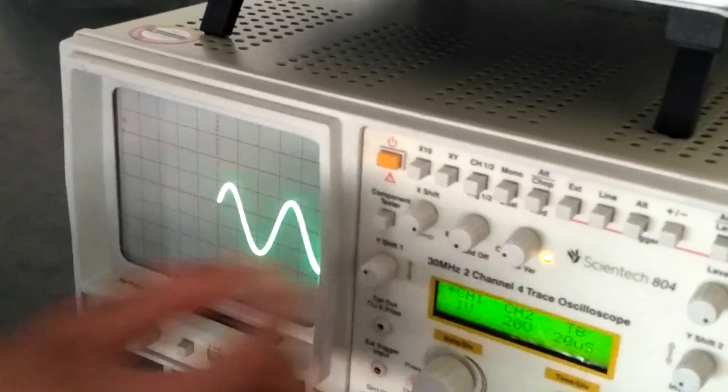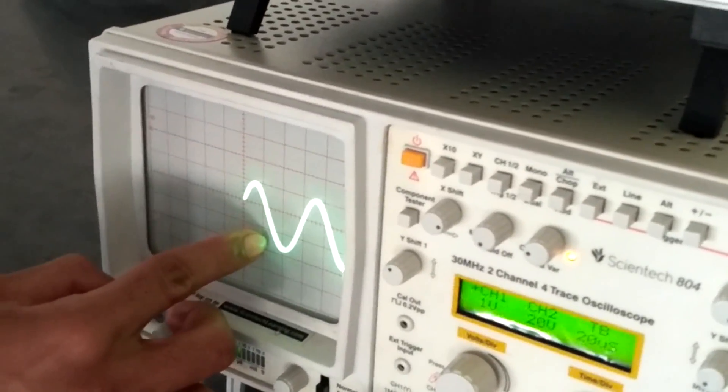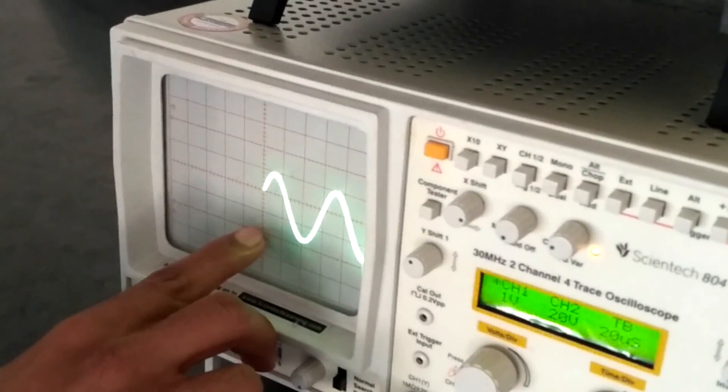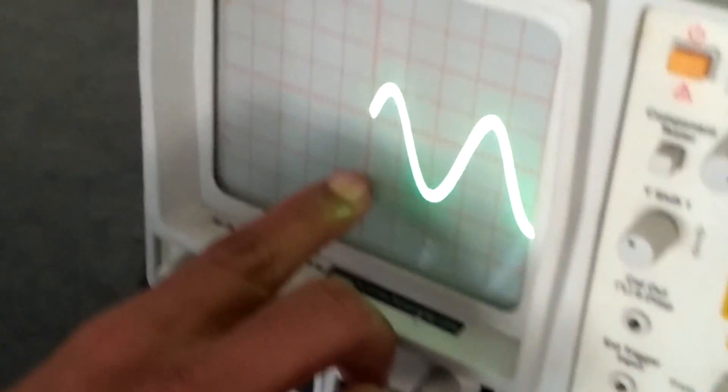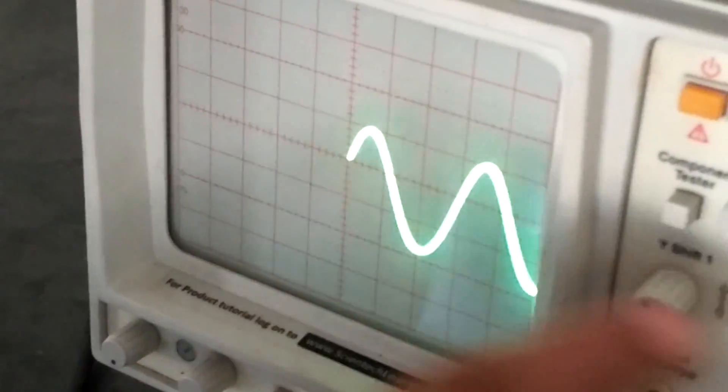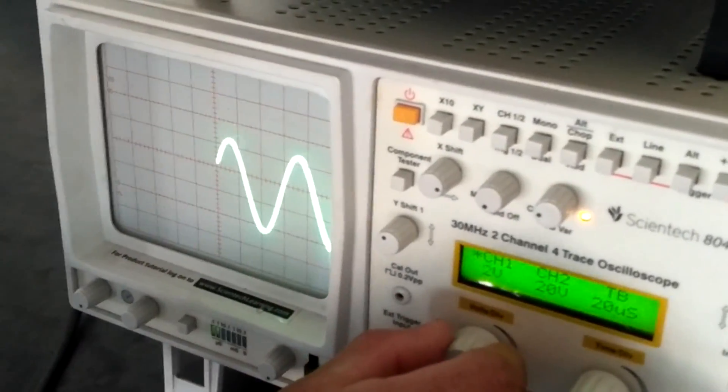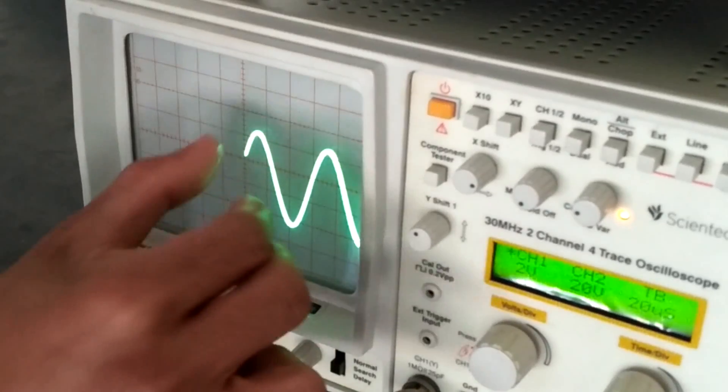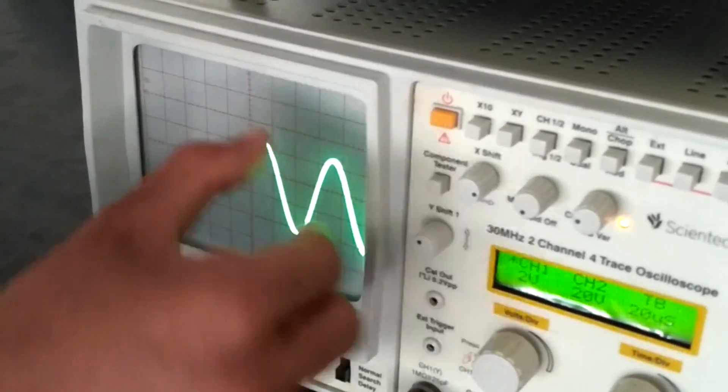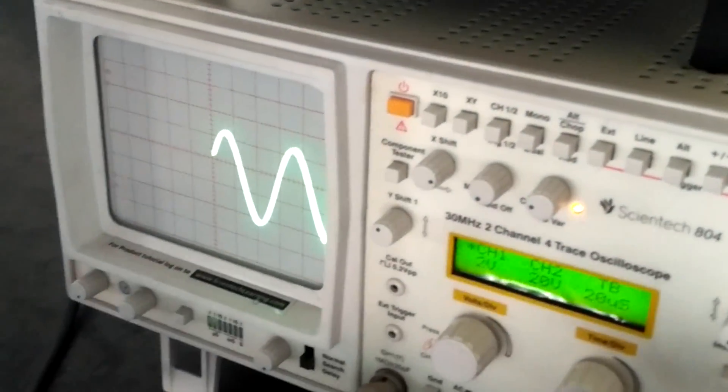In the same way we can measure peak to peak voltage. That is 1, 2, 3, 4, 5, 6, 7, 8. 1.8 into 1, that is 1.8 plus 1 volt on the upper side. So the peak to peak value is 2.8 volts. Thank you.